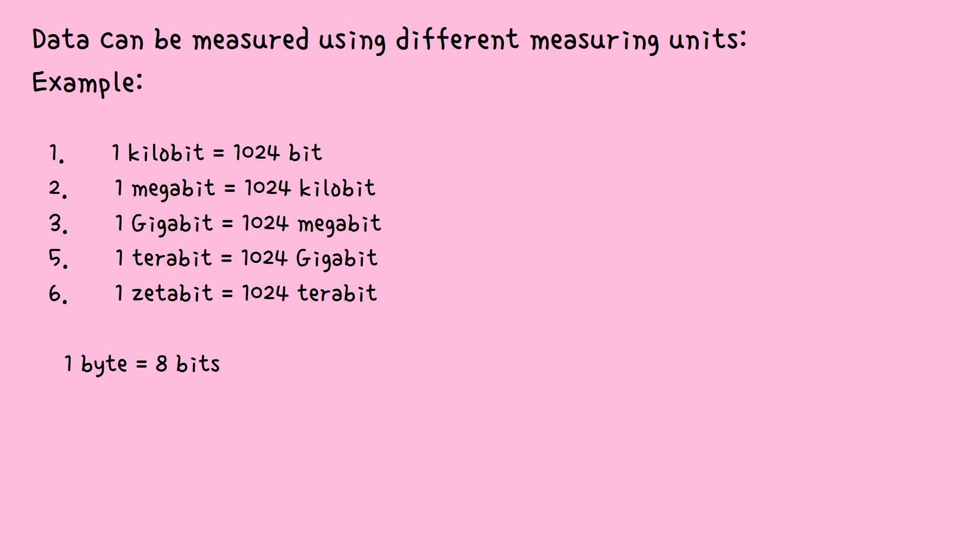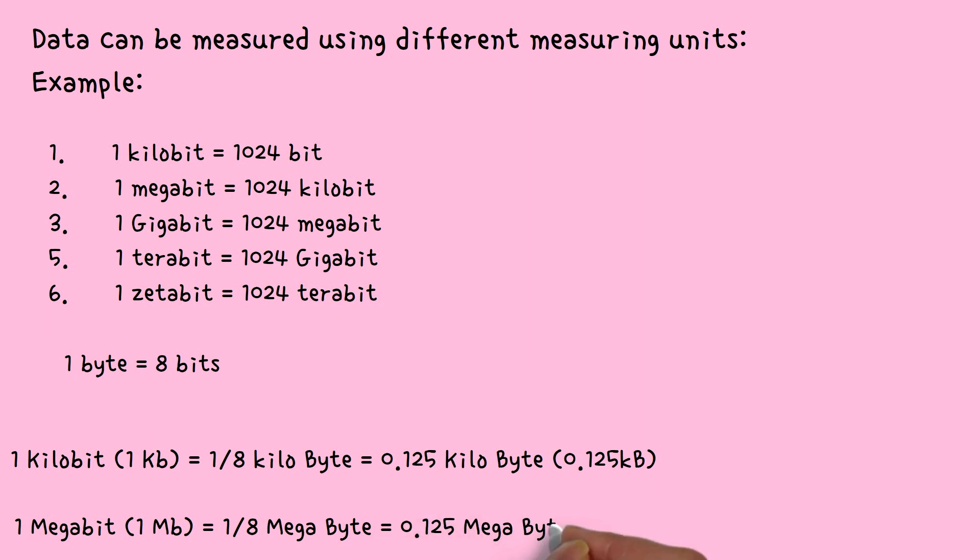Now you can convert it from bit to byte in a really simple step, which is by dividing by eight. So let me give you a few examples. One kilobit divided by eight will give you 0.125 kilobytes. All you have to do is divide by eight. Now one megabit can also be converted by dividing by eight, which will give us 0.125 megabytes.